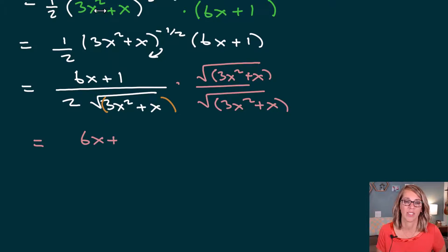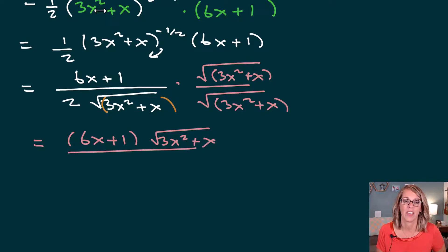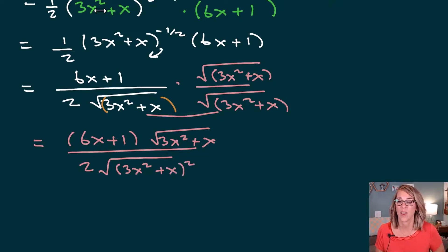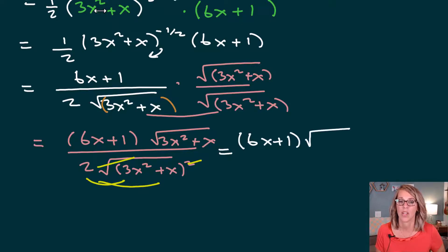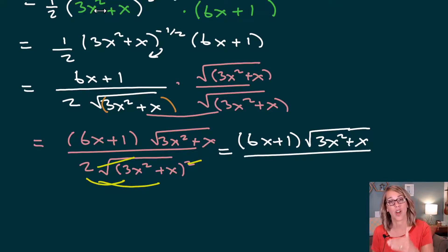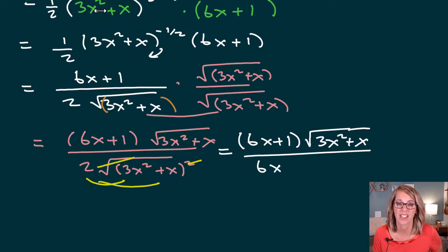Continuing, I get 6x plus one times the square root of 3x squared plus x — not a lot to do in that numerator. In the denominator, I've got two, and I've got this quantity inside the square root squared. Because this is squared, the square root and the power undo one another, and I can distribute my two through. So the final answer is 6x plus one multiplied by the square root of 3x squared plus x in the numerator, and in the denominator: two times 3x squared is 6x squared, two times x is plus 2x.